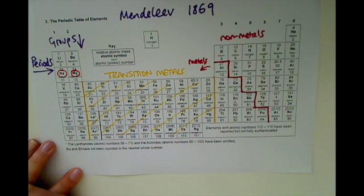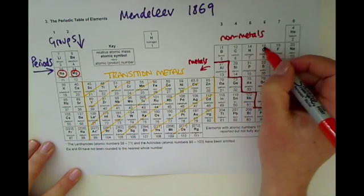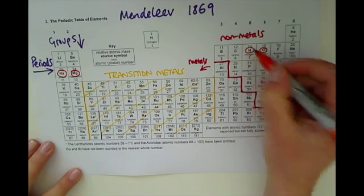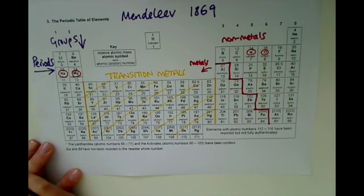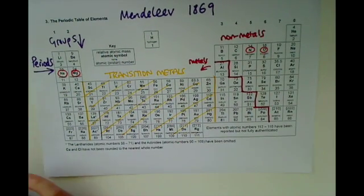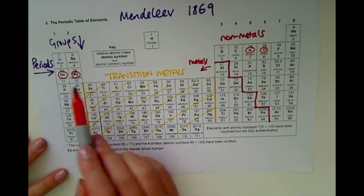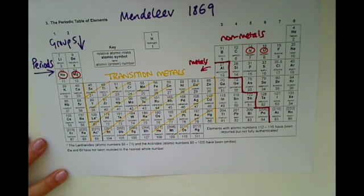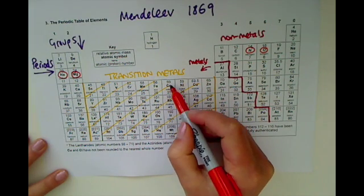Some of them only have one letter atomic symbols. For example, oxygen is just a capital O, nitrogen just a capital N. Now this is really important because when you put two elements together to make a compound, it's really important to know what that compound is made up of. For example, you see here cobalt, capital C and little o.